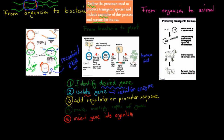So the first step was identify, and the second step was isolate. Then what we do is add regulator or promoter sequences, which means the gene itself can actually be expressed. There are so many genes on a DNA molecule — if we don't know which proteins to make or which genes to activate, then they won't be used.